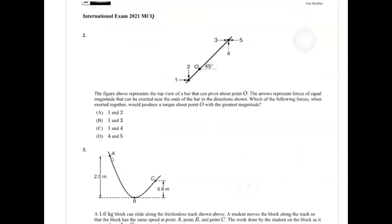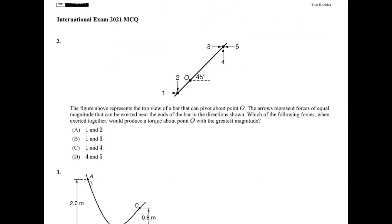Alright, question two. So the figure above represents a top view of a bar that can pivot around O. Arrows represent forces of equal magnitude that can be exerted near the ends of the bar in the direction shown. Which of the following forces, when exerted together, would produce a torque around O of the greatest magnitude?